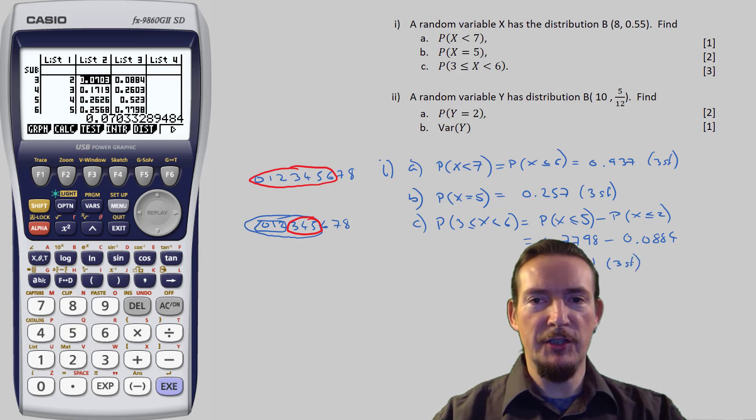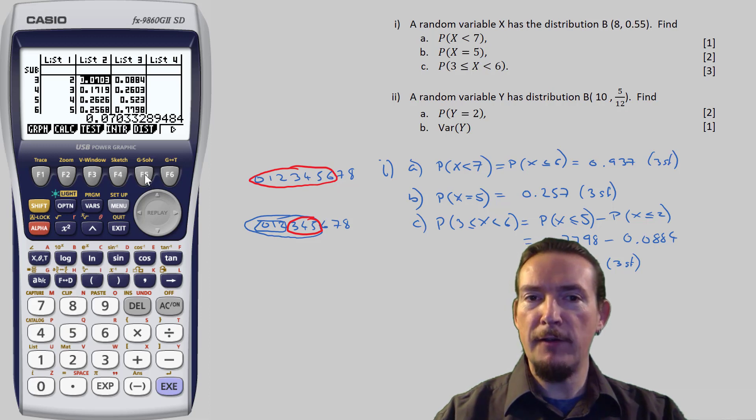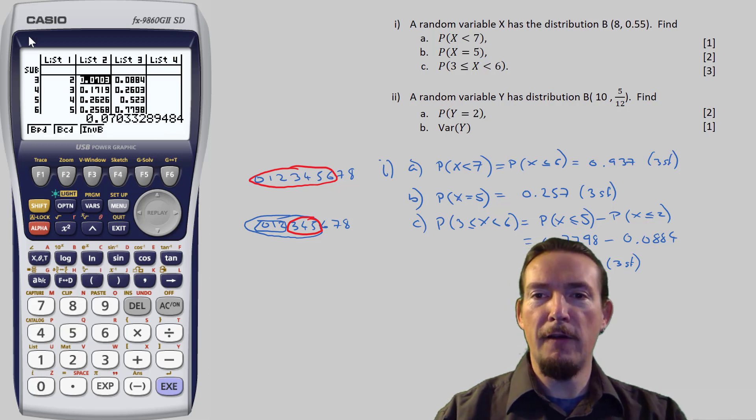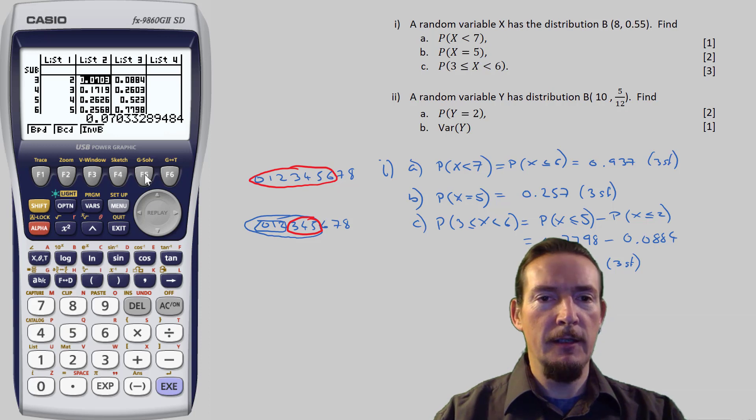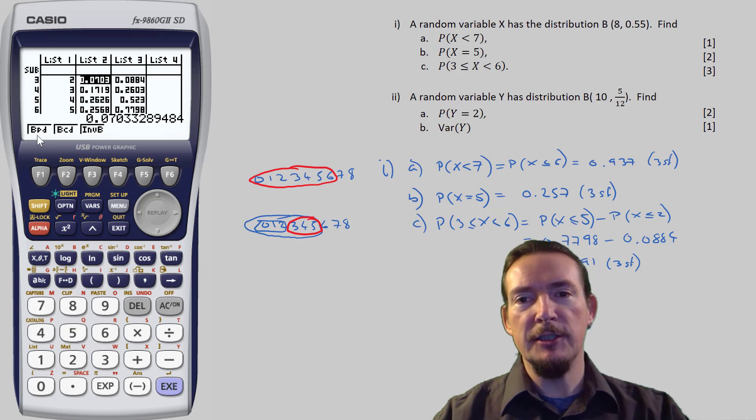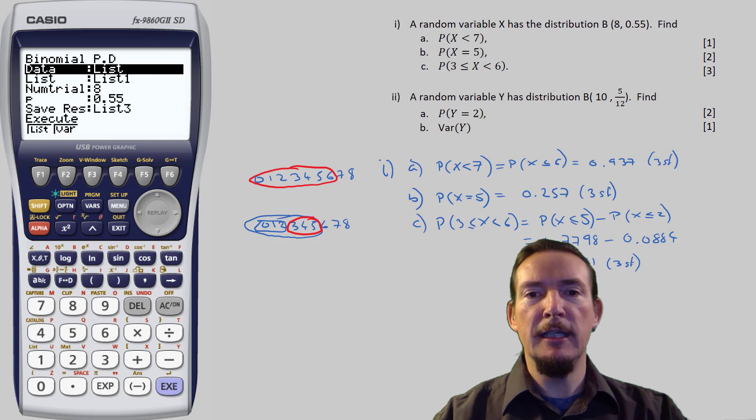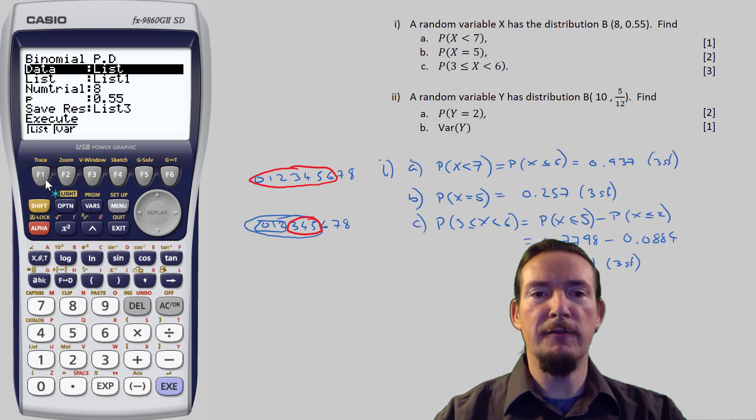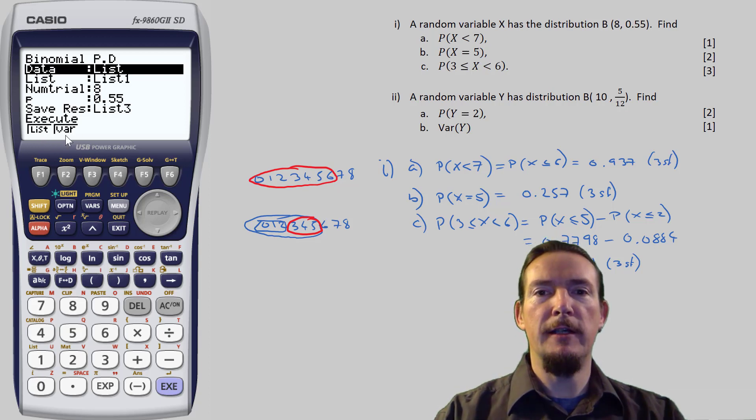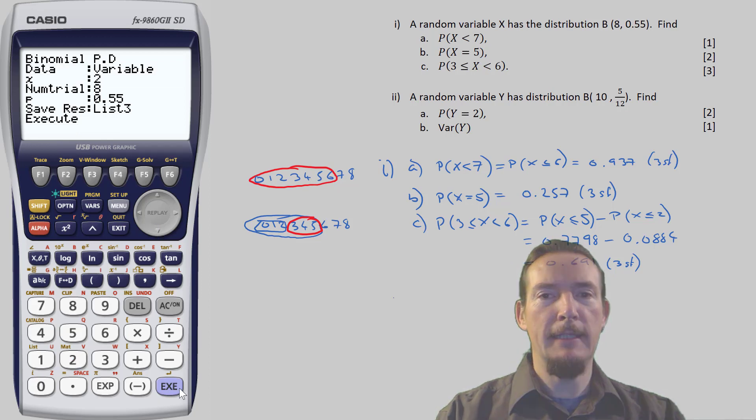Onto part 2, which concerns itself with the new random variable y, which also happens to follow a binomial distribution, but with a different set of parameters. So we need to go back and enter the distribution from scratch. So F5 for the distribution function, and F5 for binomial. We only require a single probability this time, so F1 for single binomial probabilities, and because there is only one value to find, there is no advantage of generating the whole table of results like we did in the first part of the question. So rather than inputting a range of values from a list, this time we'll input a single variable. The value of y I'm looking for is 2, so we enter it here, n is 10, and p is 5 twelfths.